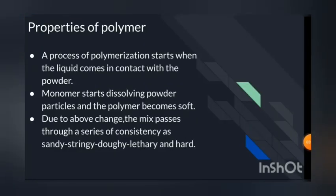Polymerization starts when the liquid comes in contact with the powder. The monomer starts dissolving the powder particles and the polymer becomes soft. Due to this change, the mix passes through a series of consistencies: sandy, stringy, doughy, leathery, and hard.